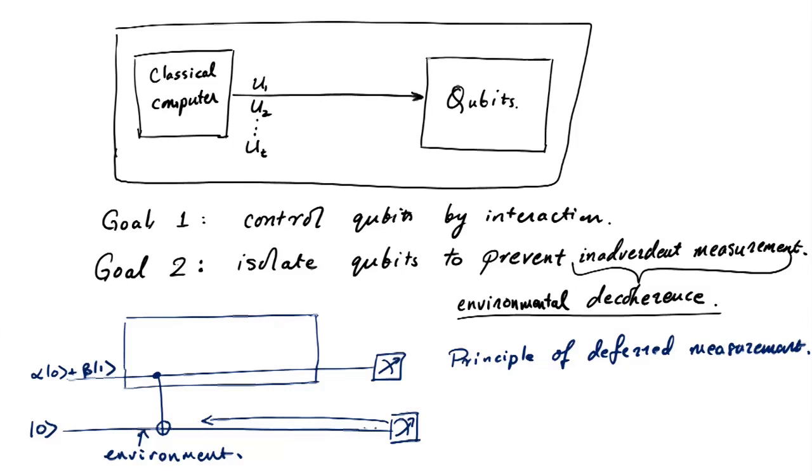So as long as this environmental qubit is not interacting with the rest of your qubits in the system, it doesn't matter whether you do the measurement at this point or you do the measurement later. It's all the same. So let's say we move the measurement back to this point. Now, what happens?